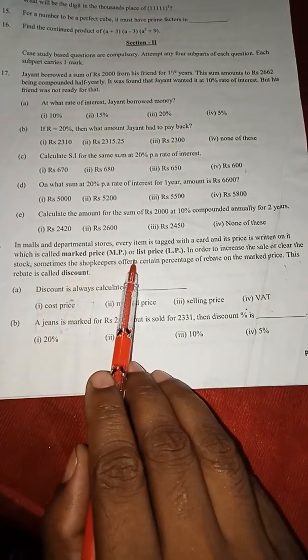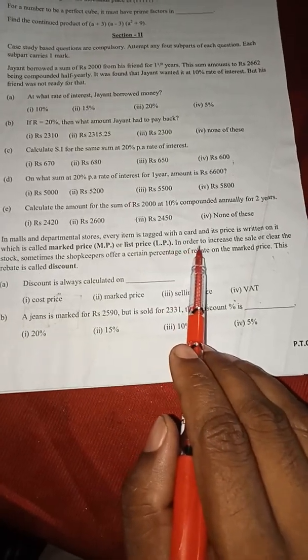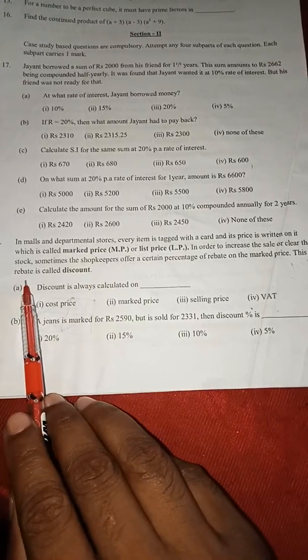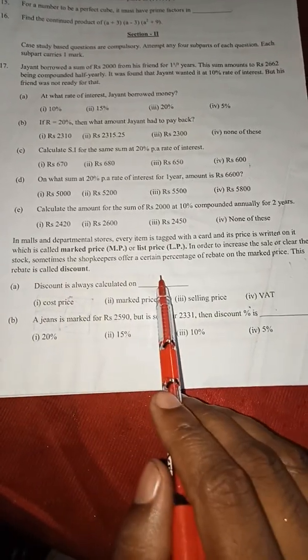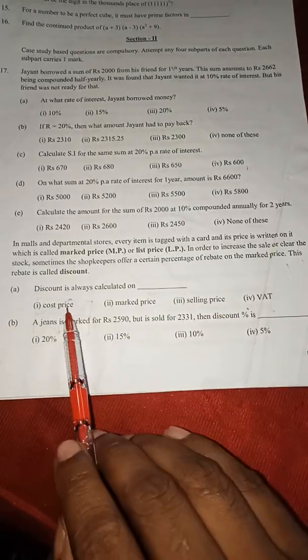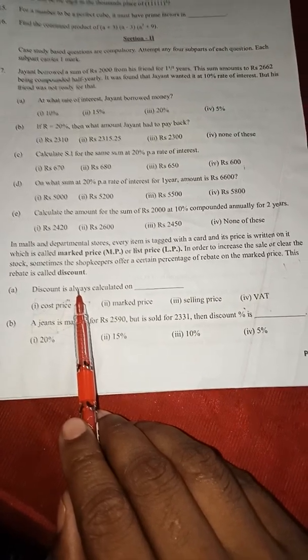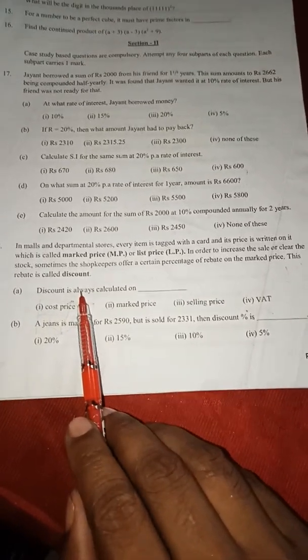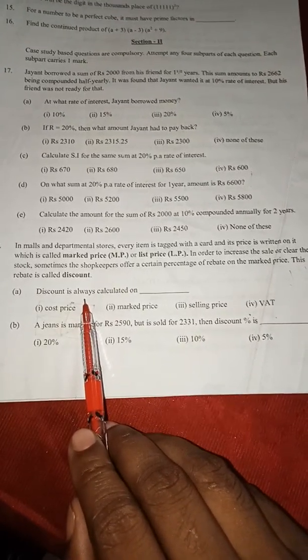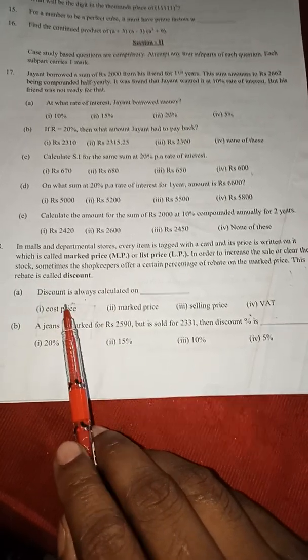It is also called the list price, in short we write LP. In order to increase the sale or clear the stock, sometimes shopkeepers offer a certain percentage of rebate on the marked price. This rebate is called discount. Several times you also see in the markets when we go, we find out which shops are giving the maximum discounts, so we go in those shops. It is also an attraction point.